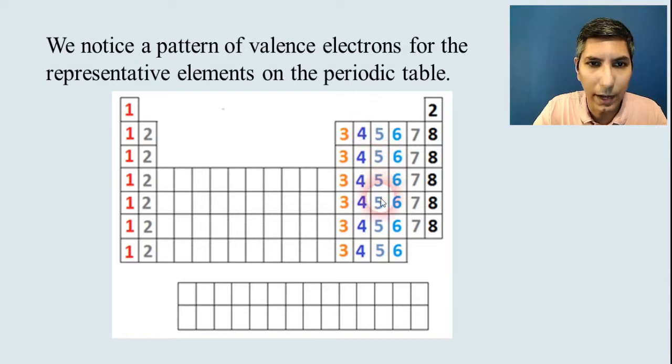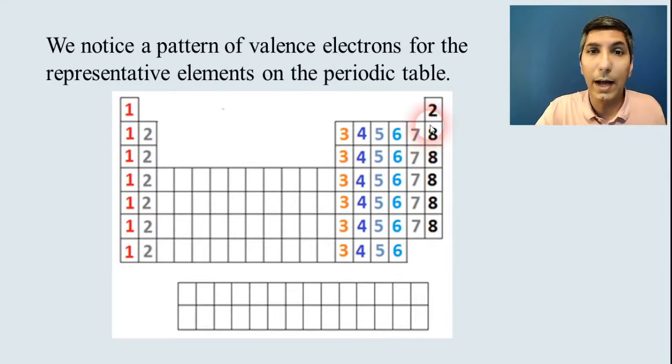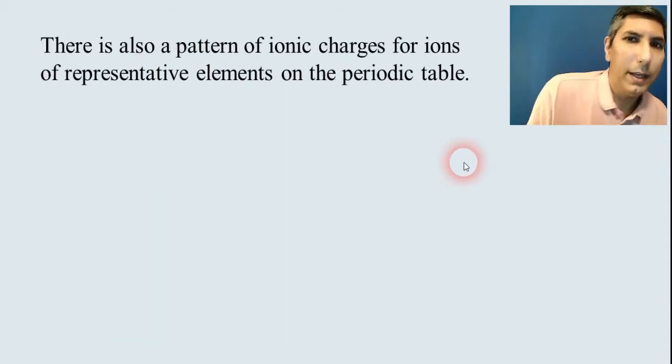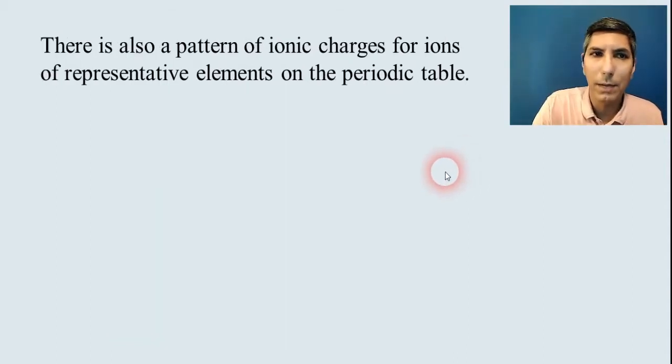Group 15 has five, group 16 has six, group 17 has seven, group 18 except for helium will have eight valence electrons. In fact, anything that has eight valence electrons, we call that an octet. And we'll talk more about that in Unit 2. So that is a pattern that you want to keep in mind.